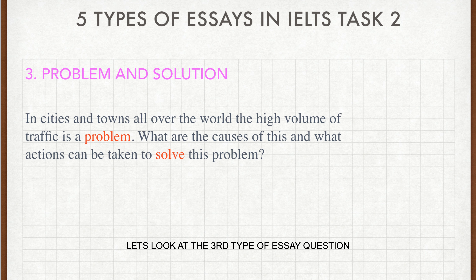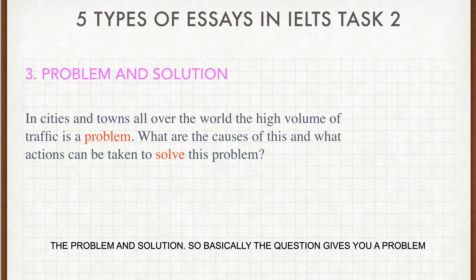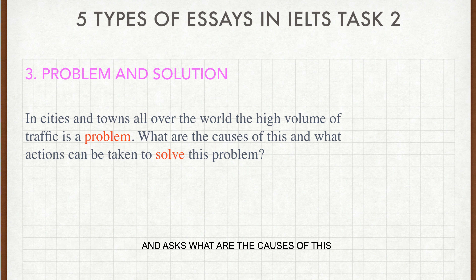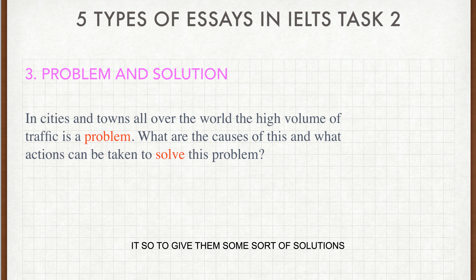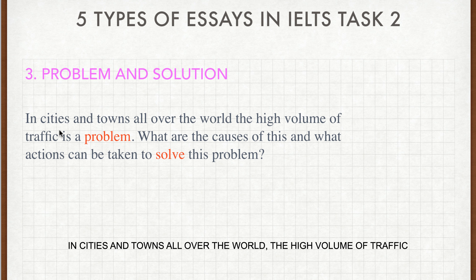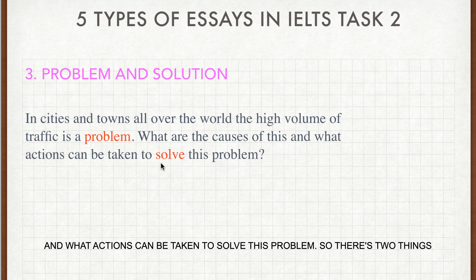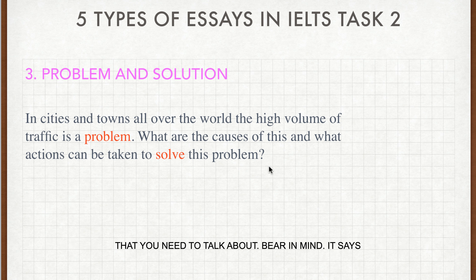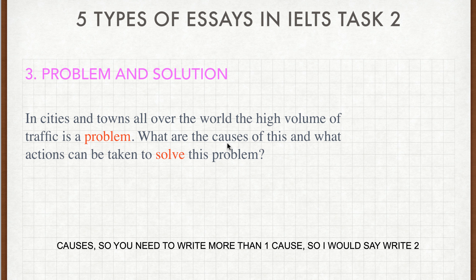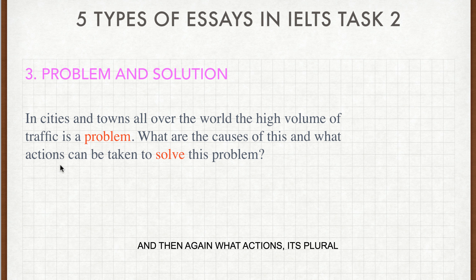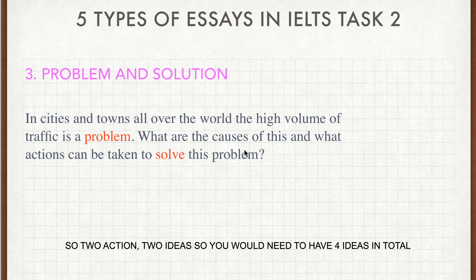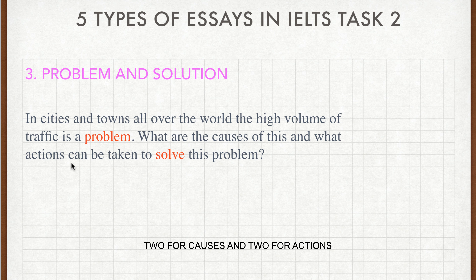The third type of essay question is the problem and solution. The question gives you a problem and asks what are the causes, and then asks you to provide solutions. For example: 'In cities and towns all over the world, the high volume of traffic is a problem. What are the causes of this, and what actions can be taken to solve this problem?' Note that 'causes' and 'actions' are plural, so write at least two causes and two actions — four ideas in total. Make sure you read the question carefully.